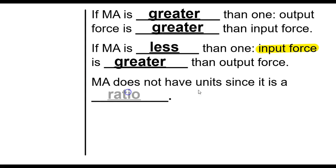Mechanical advantage does not have units because it is a ratio. This is the one time you don't have to write a unit. Don't get in the habit of it for everything else.